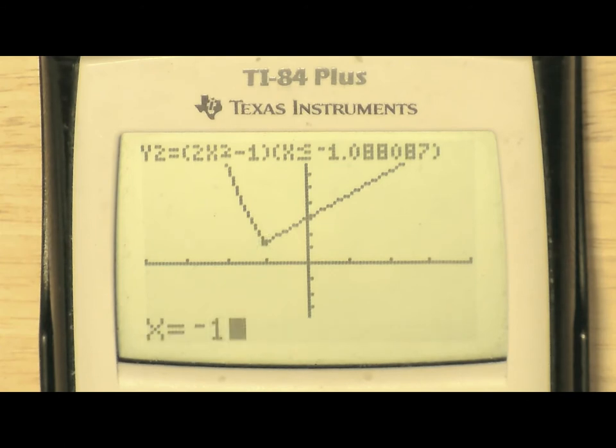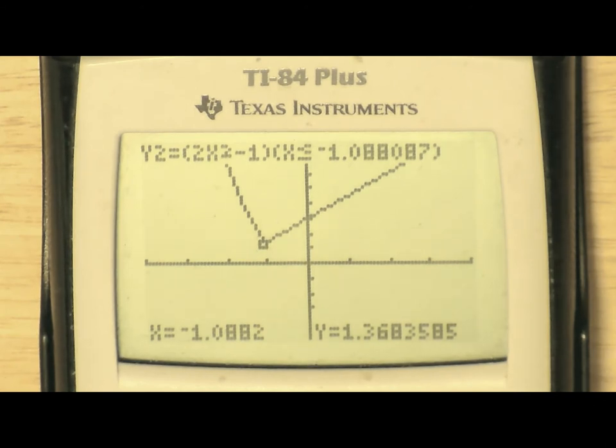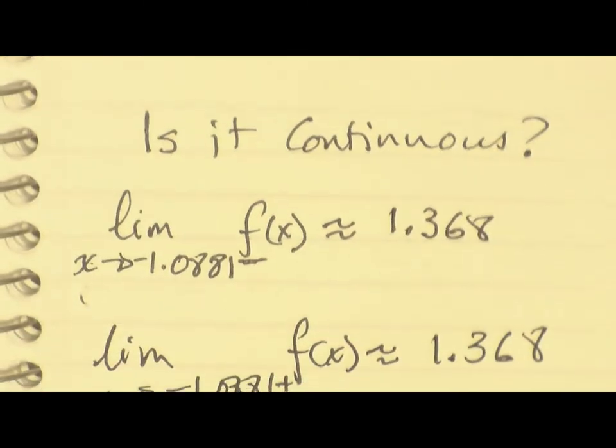So now, entering negative 1.0882, notice that this is the limit from the left, and this ends up seemingly in no man's land. We had to press the up arrow to go to the other function, and then re-enter the negative 1.0882 to get the desired value.